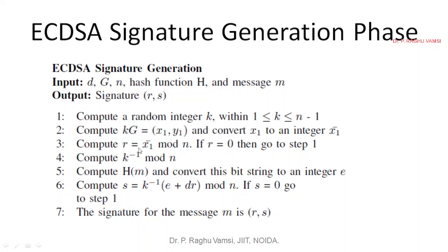Now consider this x1 value and take it as an integer value. In step 3, r equals x1 mod n. If you perform modulo operation on x1 with the prime number n, if you get 0, then go to step 1 and choose a new random number and again multiply with the point and take the x1 value. If it is not equal to 0, then go to step 4.